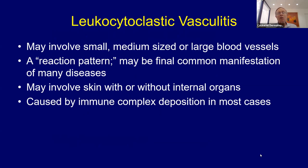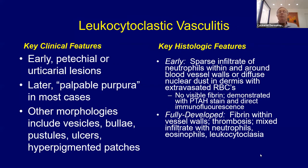The most common that you biopsy when somebody comes in with palpable purpura is leukocytoclastic vasculitis. This can involve small, medium-sized, or larger blood vessels. When talking to internists like Warren Piette, the skin really doesn't have large blood vessels — nothing like a temporal artery or the aorta. So in the skin we get larger blood vessels involved, capillaries, and venules. It's a reaction pattern — it may involve the skin alone or have internal organ involvement — and is generally caused by immune complex mediation.